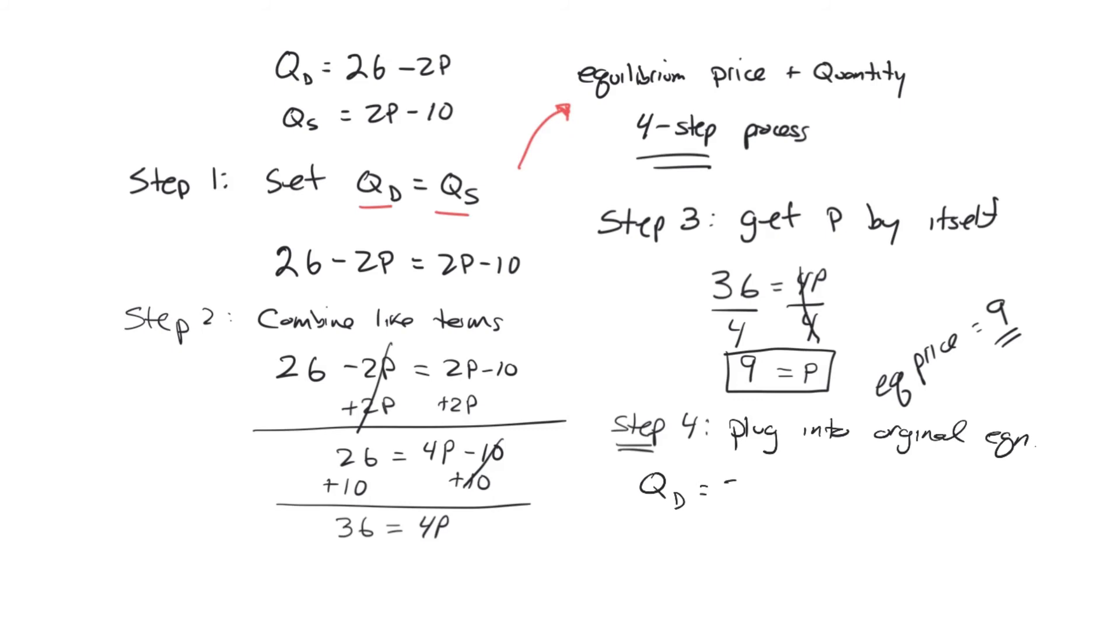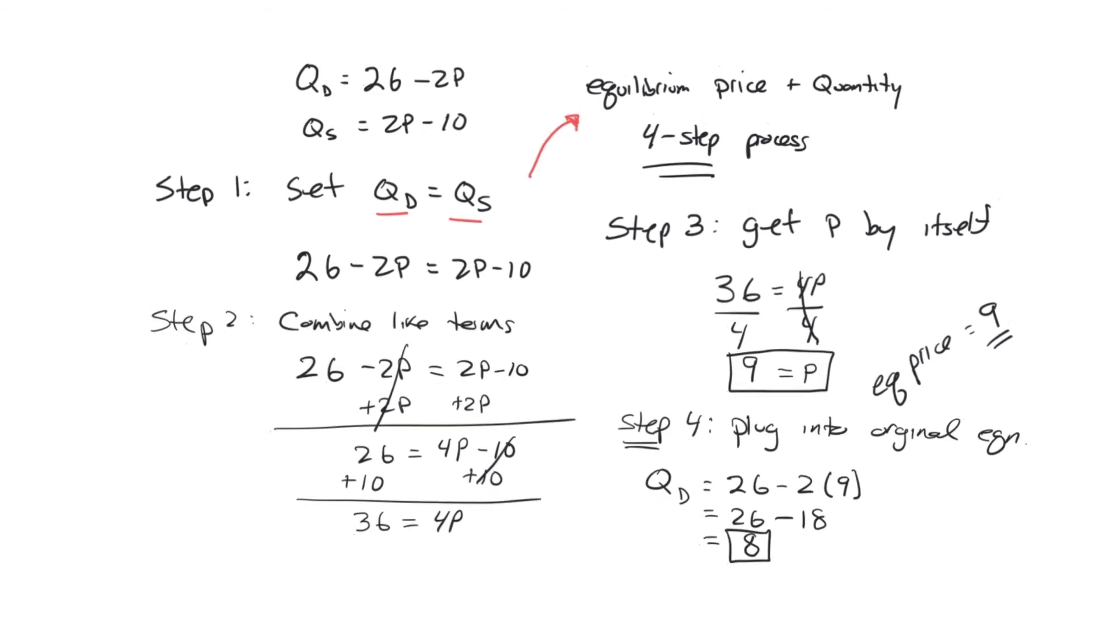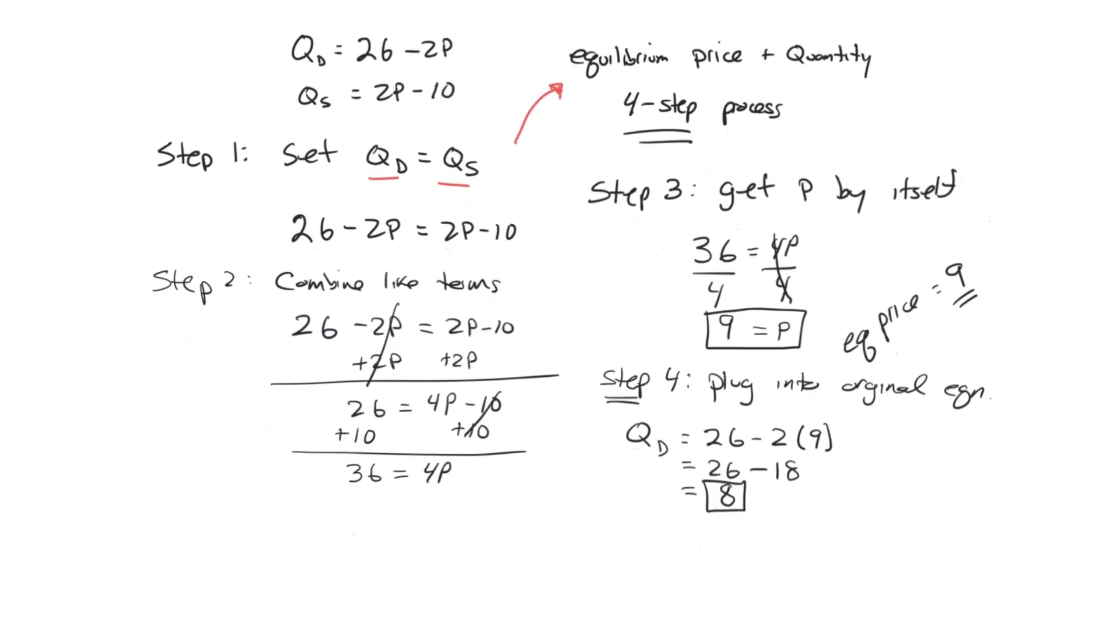So quantity demanded is 26 minus 2 times P. But we know P is 9, so this means that it's 26 minus 2 times 9 is 18, which means that my quantity demanded is 8. What about my quantity supplied? Well my quantity supplied is 2 times P, which I know is 9, minus 10. Again this is 18 minus 10, which is 8. So we found that quantity demanded is equal to quantity supplied, which is equal to 8.